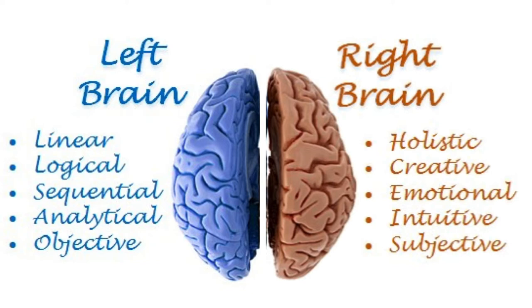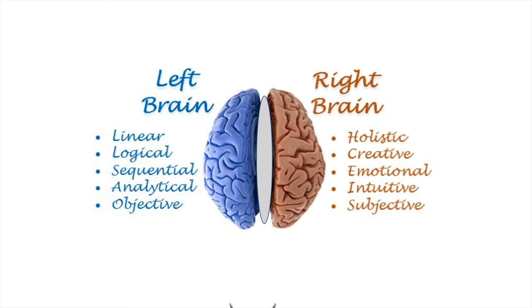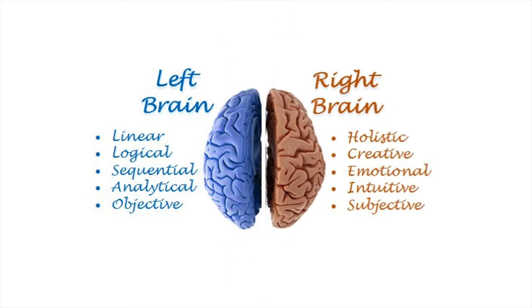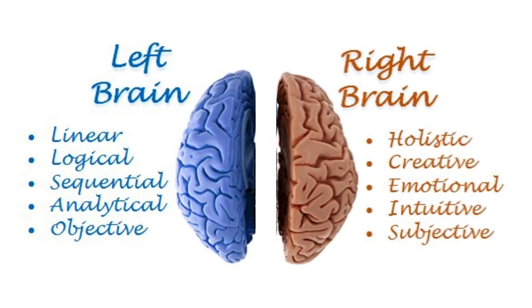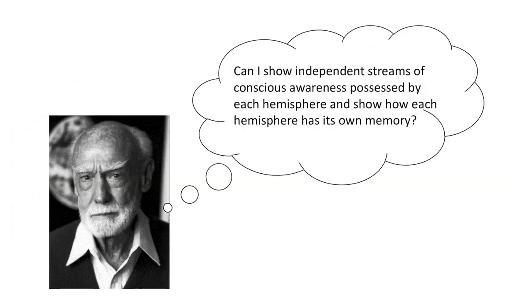These hemispheres are connected in the brain by the corpus callosum, a large band of white matter which is efficient at sending information. The corpus callosum may be severed by surgeons in order to reduce the symptoms of epilepsy. This procedure is called commissurotomy.